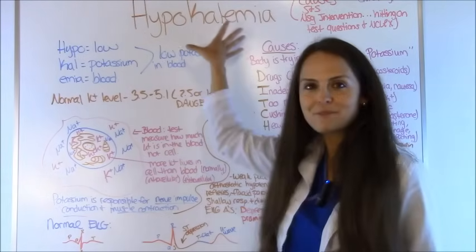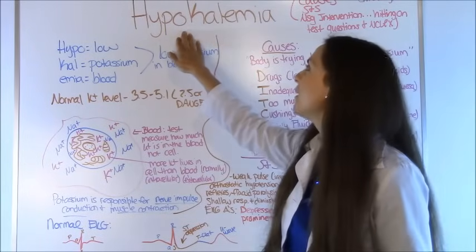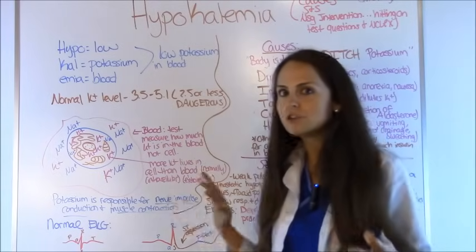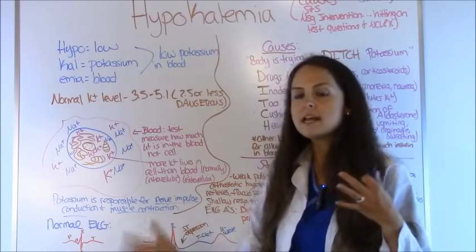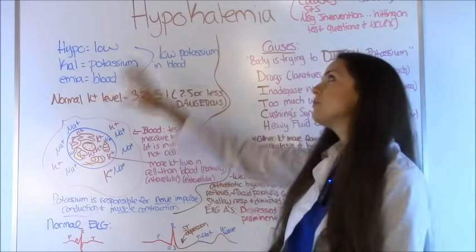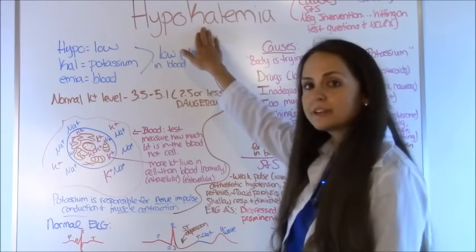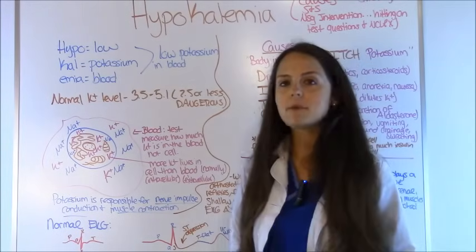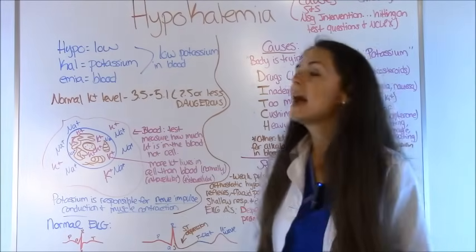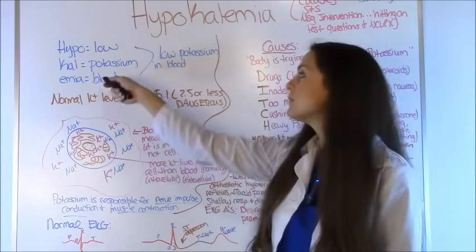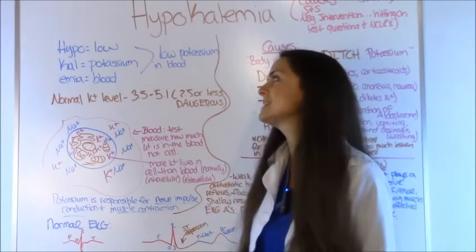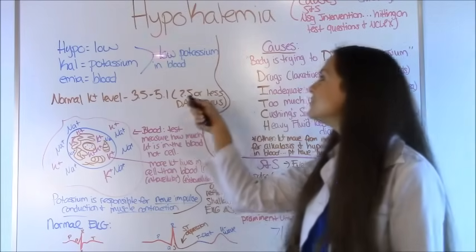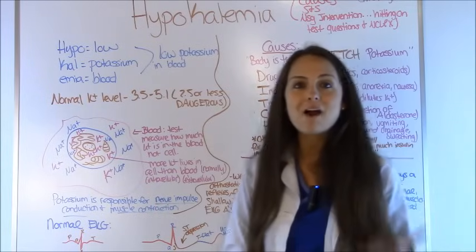Anytime I have a big word like this, I like to take it apart. I like to take each phrase and dissect what it is, because you have a lot of these — hyponatremias, hypernatremias — you want to make sure you know which electrolyte you're dealing with. So the first part is hypo, which means low. Kal, K-A-L, is the root word for potassium, so we know we're dealing with low potassium. And emia means blood. So we have low potassium in our blood.